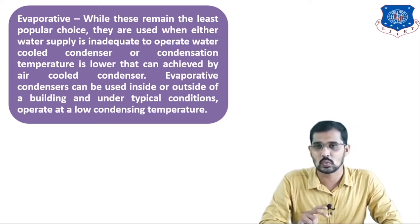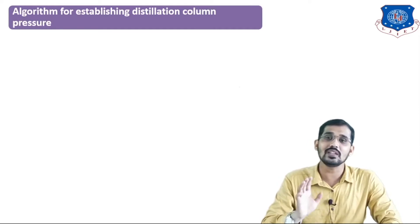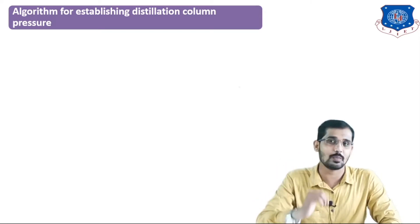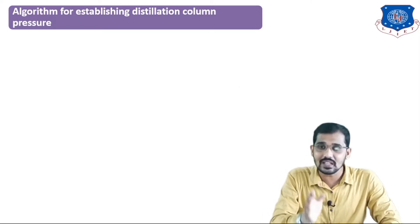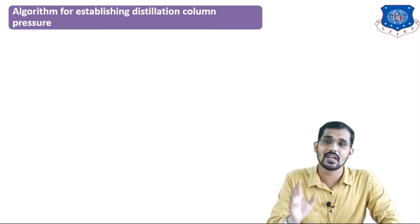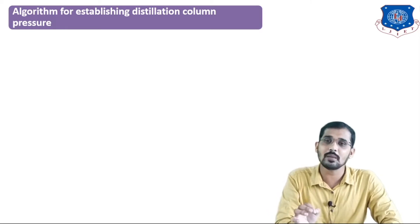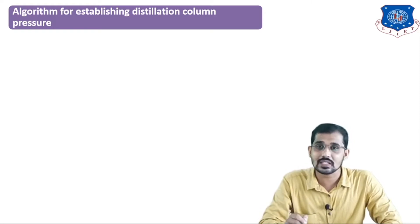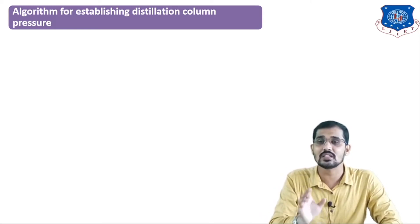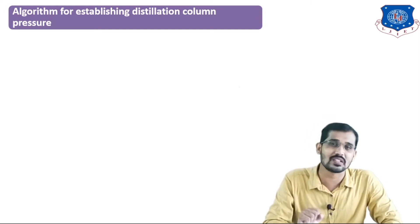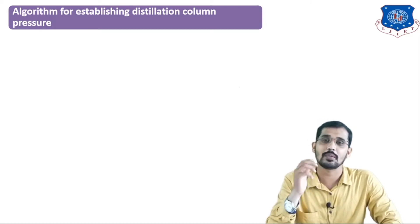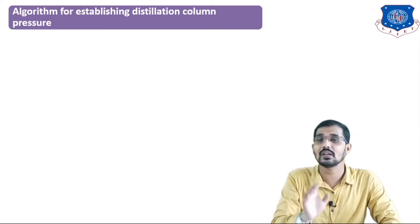These different types of condensers can be asked for three marks only. Now we will see the algorithm for establishing distillation column pressure. In a distillation column, temperature and pressure increase from top to bottom — maximum temperature is at the lower section, while minimum temperature and pressure are at the top section. High boiling point mixtures form the bottom product, and these can be operated in vacuum distillation, where pressure is around 30 to 50 mmHg, which is less than one atmospheric pressure.